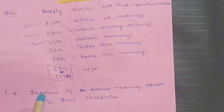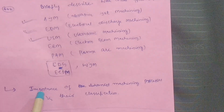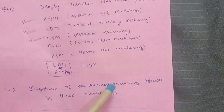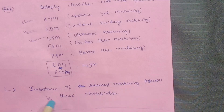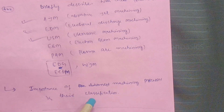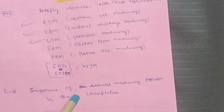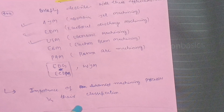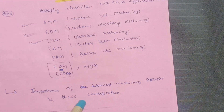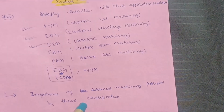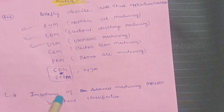You also have to write down the importance of advanced machining processes and their classification. Define non-traditional machining — it is a simpler one. You can easily avail 20 marks in this particular module. Let me now proceed with Module 1.